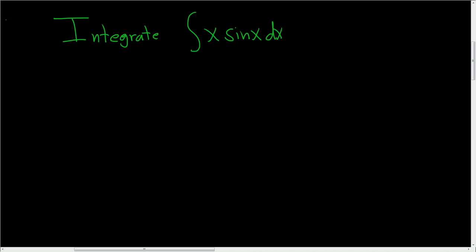In this video we're going to integrate x sine x using tabular integration. To use tabular integration, we pick a piece that after repeated differentiation eventually becomes 0. That piece here is x, and over here we have sine x.